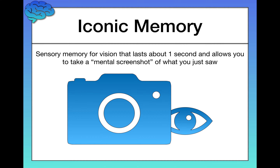Iconic memory is sensory memory for vision — think icon, iconic. It lasts only about one second, so it has a very brief, short duration. This allows you to take a mental screenshot of what you just saw, hold an image in your mind ever so briefly, and then pass that image on to short-term memory.